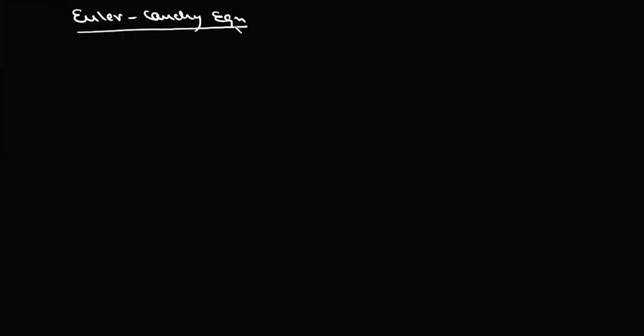Now we are going to start the Euler-Cauchy equation. Second order homogeneous linear equations of Euler-Cauchy form are of the form x² y'' + axy' + by = 0, where a and b are constants. This equation per se is not a second order homogeneous linear differential equation with constant coefficients, as we have x² and x. Such equations are called Euler-Cauchy equations.